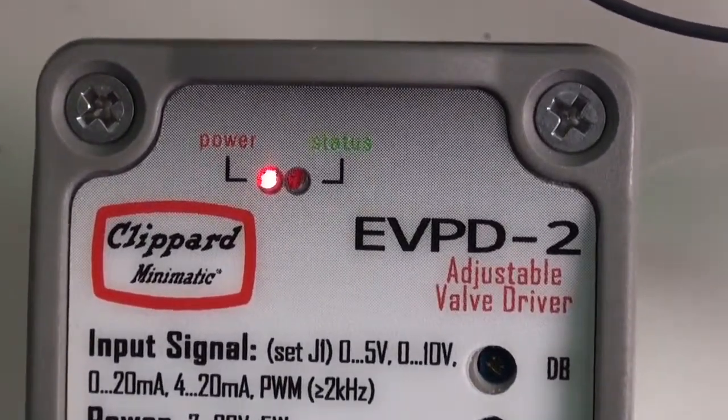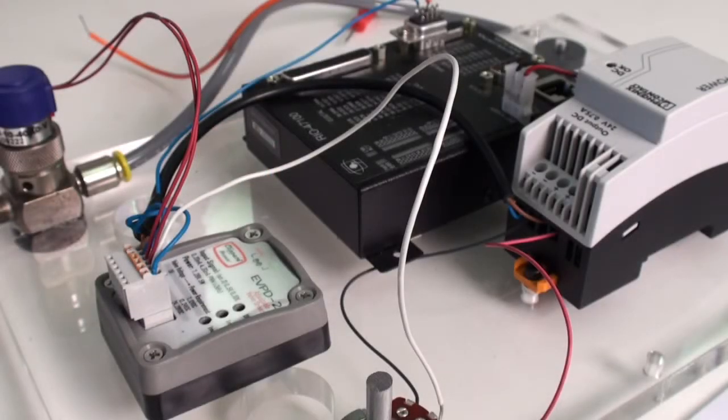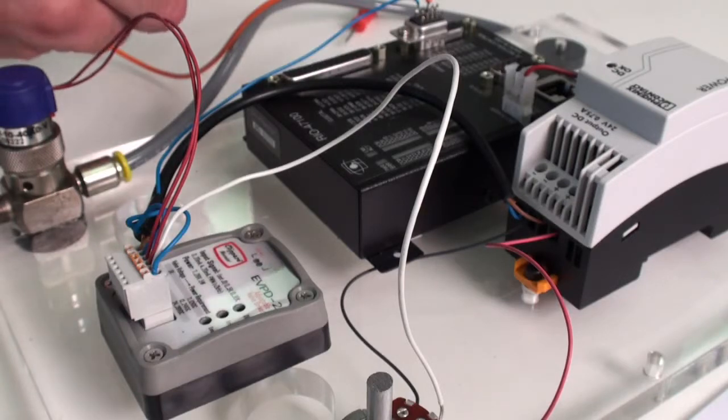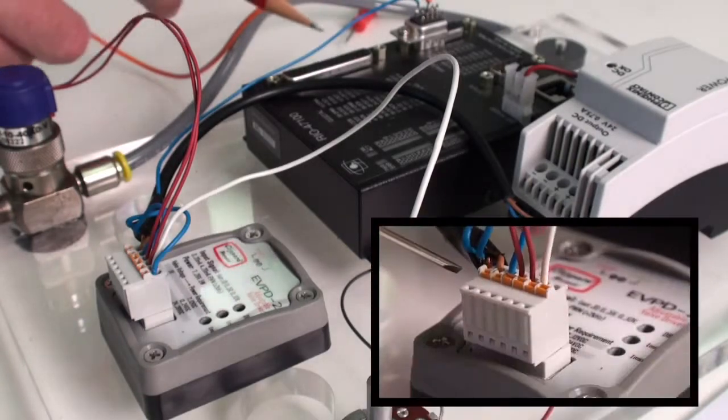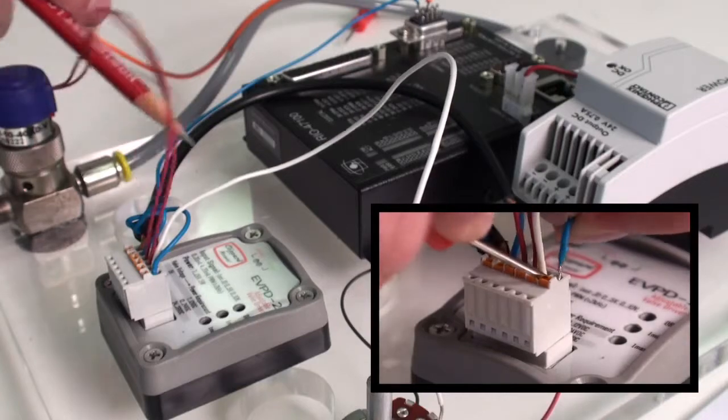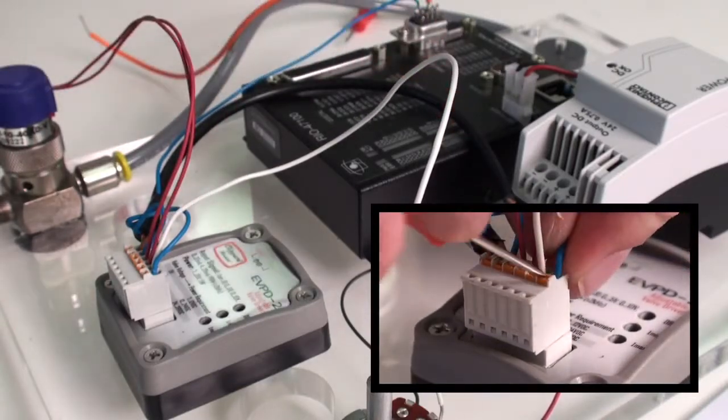Also, bear in mind that the command signal must be referenced to the low side of the supply power. So, for example, if we were using the PLC, its analog ground must reference the ground of the power supply, which is shown here.